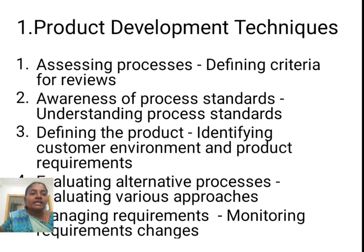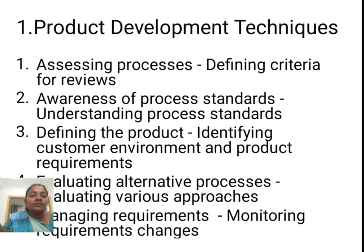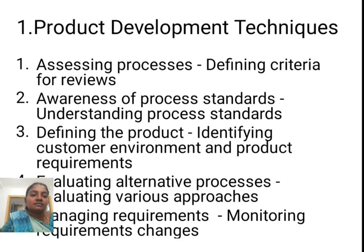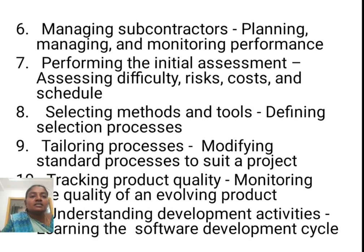The first category is Product Development Techniques, which has 11 criteria. The first one is Assessing Process and Defining Criteria for Reviews. The second one is Awareness of Process Standards and Understanding Process Standards. The third one is Defining Product and Identifying Customer Environment. The fourth one is Evaluating Alternative Processes and Evaluating Various Approaches. The fifth one is Managing Requirements and Monitoring Requirements Changes. The sixth one is Managing Subcontractors — Planning, Managing, and Monitoring Performance.